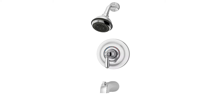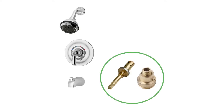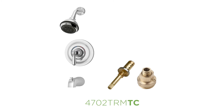The easiest way to get the cap and cartridge is to simply order them along with your trim kit. To do this, just include the letters TC when ordering your trim kit. So if you wanted the standard Allura tub and shower trim kit — that would be a 4702 TRM — to include the TA10 and T12A cap and cartridge, the part number becomes 4702 TRM TC.